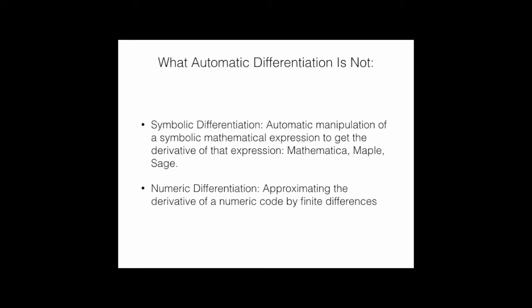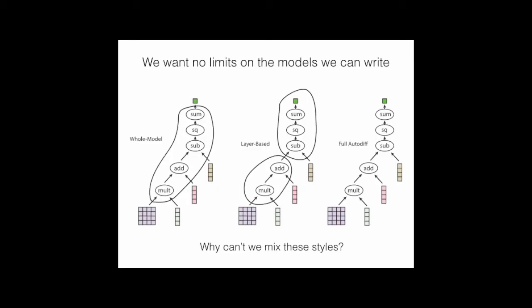With this technology, automatic differentiation, we don't want limits on the models we can write. Sometimes a whole model is a good abstraction—I just want to use a neural network and be done. Or sometimes a layer is good because I've spent time making one layer really fast, like a convolution. Engineers at NVIDIA spend large fractions of a year making that operation fast—I want to take advantage of that. But other times I want to do something weird nobody's written before, using add, multiply, sine, and cosine to compose something new. We should be able to mix these styles.